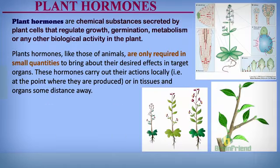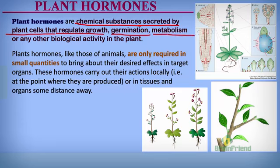Plant hormones are also called plant growth regulators or plant growth factors. All of these hormones perform various functions in the bodies of plants, but the major role of these hormones is to stimulate growth in plants. Plant hormones are chemical substances secreted by plant cells that regulate growth, germination, metabolism, or any other biological activity in plants. Take note: first they stimulate growth, they control metabolism, and they can also control germination of seeds and any other biological process within plants.